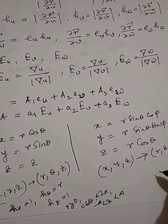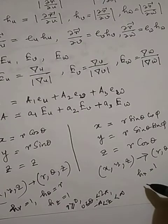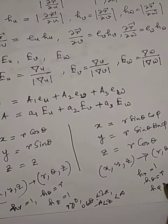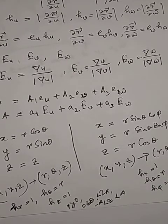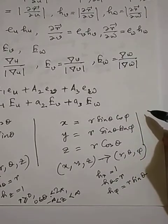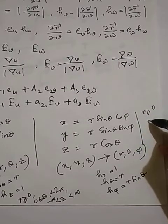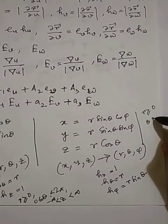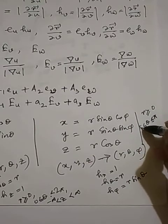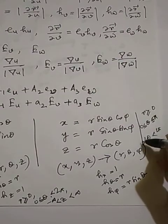For the spherical system, h_R equals 1, h_theta equals R, and h_phi equals R sin theta. In this case, R is greater than or equal to 0, theta ranges from 0 to π, and phi ranges from 0 to 2π.